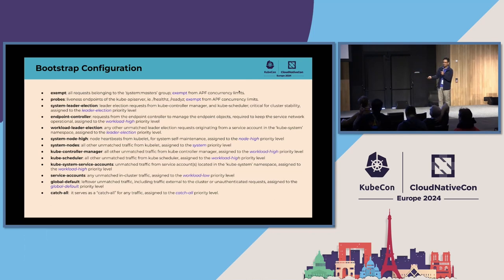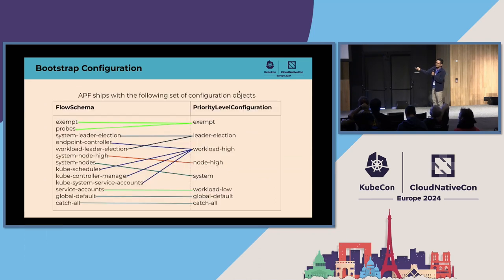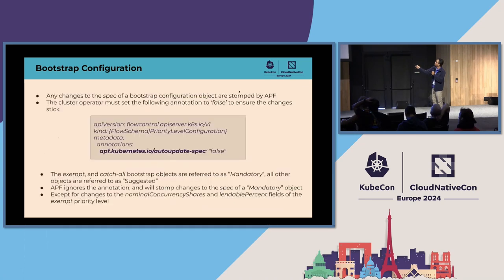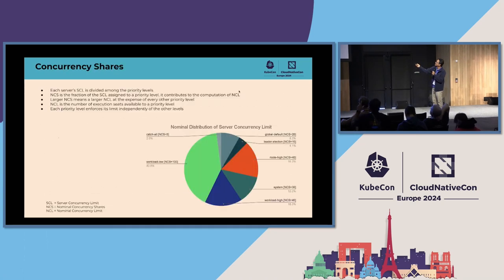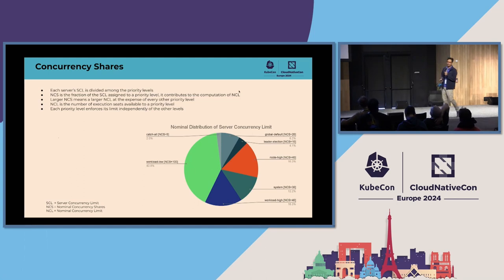As a follow-up, in the graphs shown, one example was a custom OpenShift configuration — that was a custom bootstrap configuration. You can indeed create custom configurations by adding your own flow schemas and priority levels. Thank you.